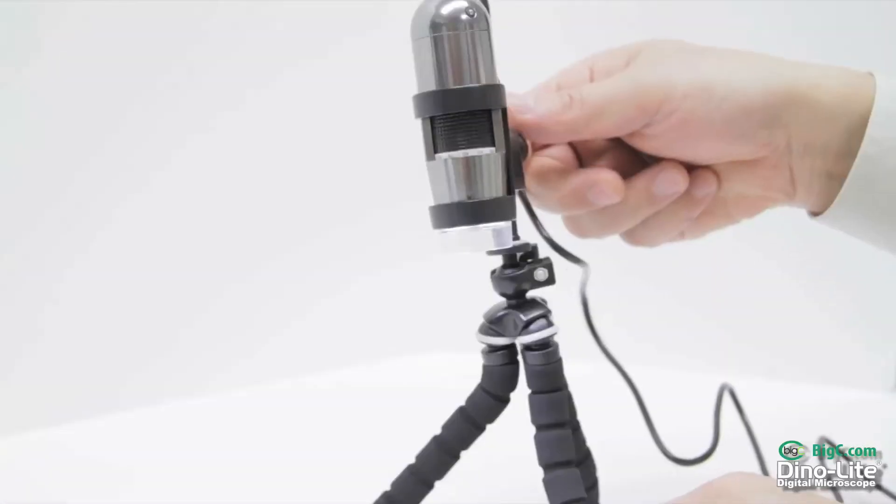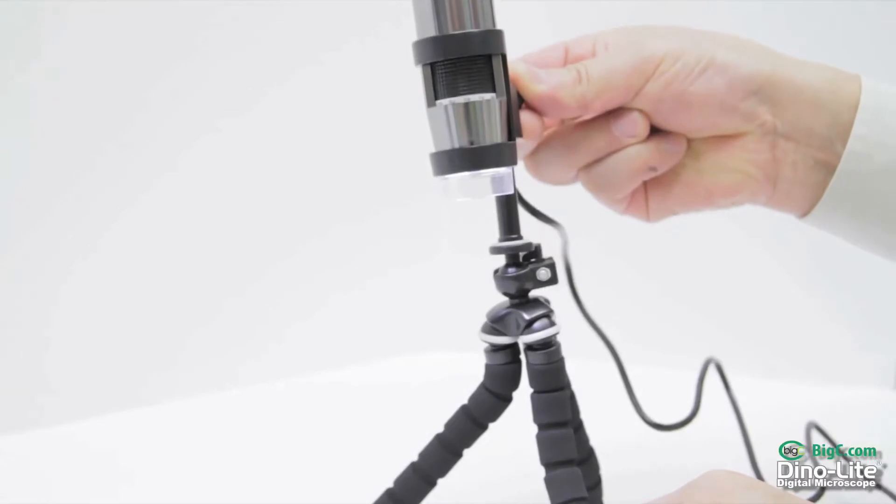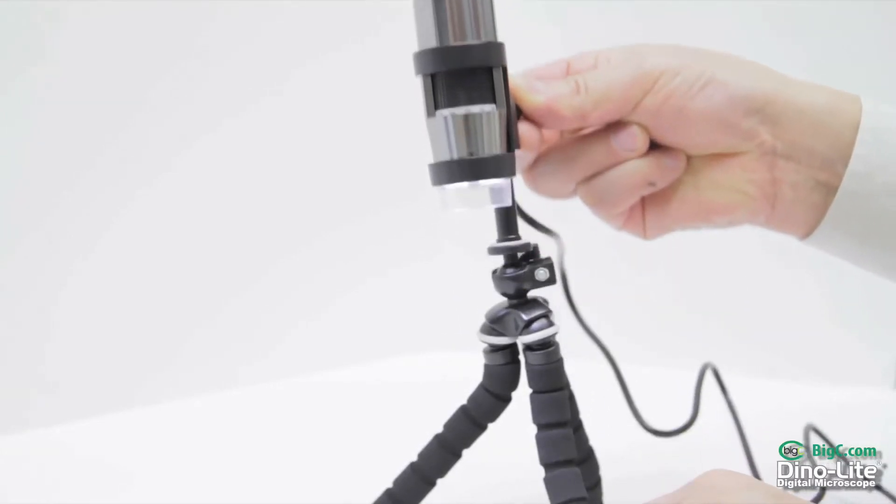This also has a ball joint pole mount for added versatility. By loosening the holster set screw, you can adjust the scope height.